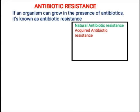یہ جو acquired resistance ہے، یہ horizontal way میں transfer ہوتی ہے، لیکن جو natural antibiotic resistance ہے، یہ basically vertical way میں transfer ہوتی ہے۔ اب اسی سے related کچھ important terminologies ہیں — we have MDR, which means multiple drug resistant.